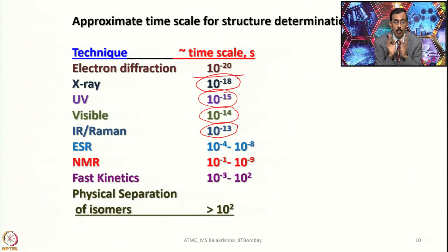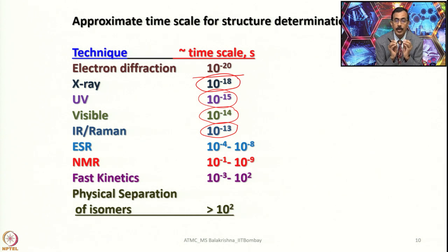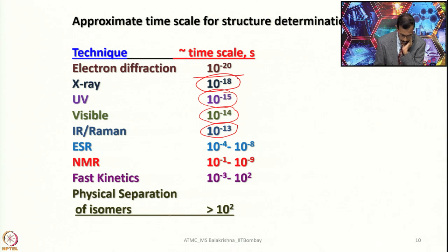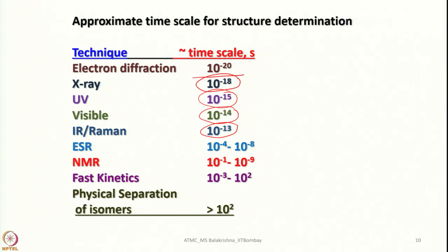Dynamic processes occurring in the time scale of 10⁻¹ to 10⁻⁹ seconds can be identified by NMR. If the process is slower than 10⁻¹ or faster than 10⁻⁹ seconds, NMR fails to give insight into those dynamics in solution. Fast kinetics span 10⁻³ to 10² seconds. For physical separation, if a sample is stable for more than 100 seconds, one can pick them by hand, or under a microscope if they have different morphology.